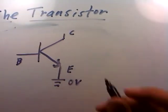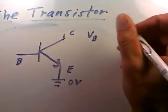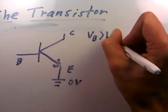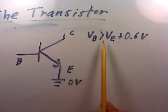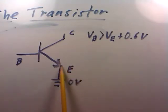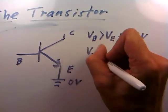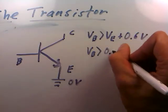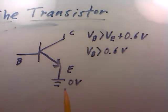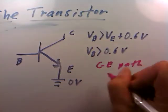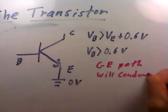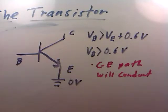The transistor works like this: if the voltage on the base is greater than the voltage on the emitter plus 0.6 volts, the transistor turns on. Since we're always holding the emitter at zero volts, what we're really saying is: if the voltage at the base is greater than 0.6 volts, then the collector-emitter path will conduct. That's the transistor in a nutshell.